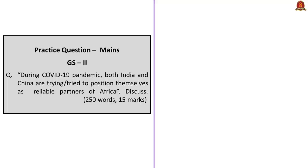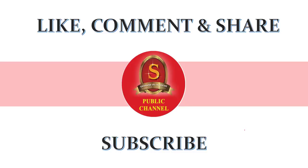The mains question for this session: 'During the COVID-19 pandemic, both India and China tried to position themselves as reliable partners of Africa. Discuss.' Please write your answers and send them to us — we will evaluate and provide feedback. With this, we conclude today's news analysis. If you find this session resourceful, click the like button, share your appreciation in the comments, and subscribe to our YouTube channel. Stay home, stay safe.